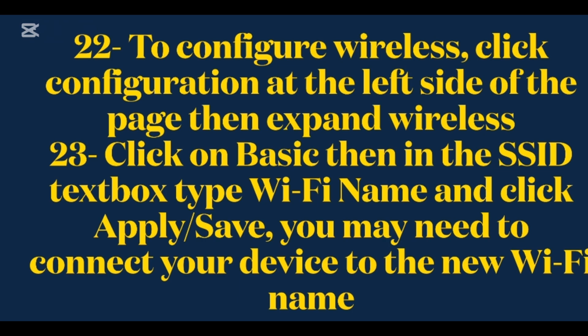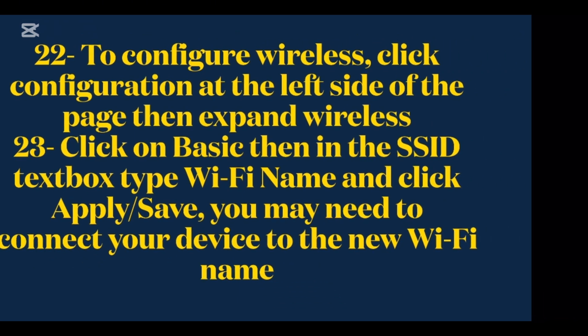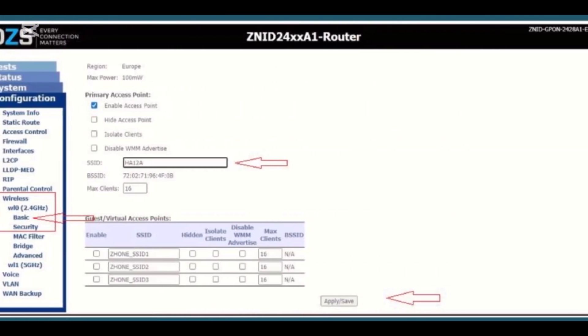To configure wireless, click Configuration at the left side of the page, then expand Wireless. Click on Basic, then in the SSID textbox, type your Wi-Fi name and click Apply Save. You may need to reconnect your device to the new Wi-Fi name.